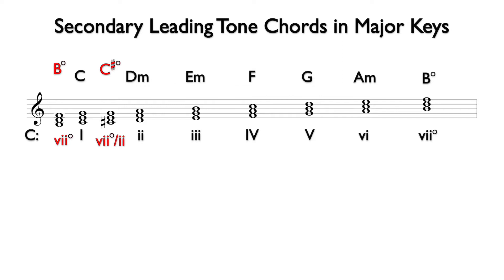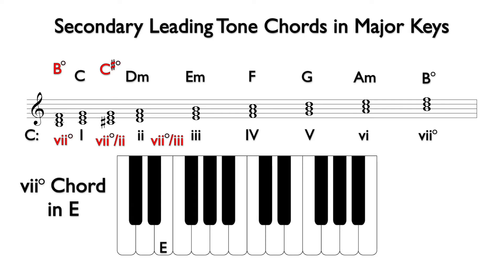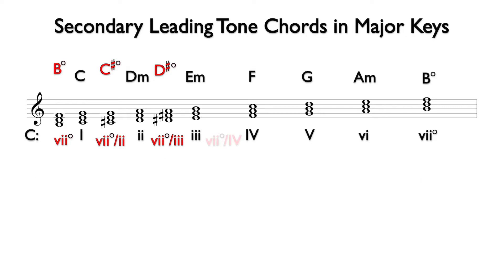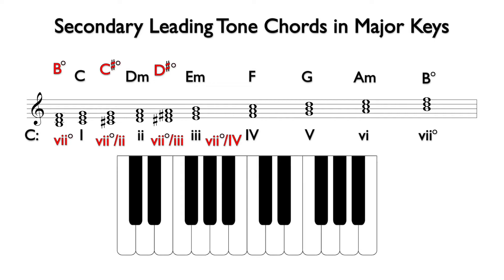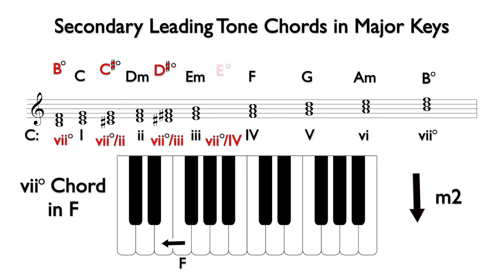We expect that the seven diminished of two will lead to two. Next, we will find the seven diminished of three. We find the seven diminished chord in the key of E, which is a minor second below E. This is D sharp diminished, and the notes are D sharp, F sharp, and A. Next, we find the seven diminished of four. We find the seven diminished chord in the key of F, which is a minor second below F. This is E diminished, and the notes are E, G, and B flat.